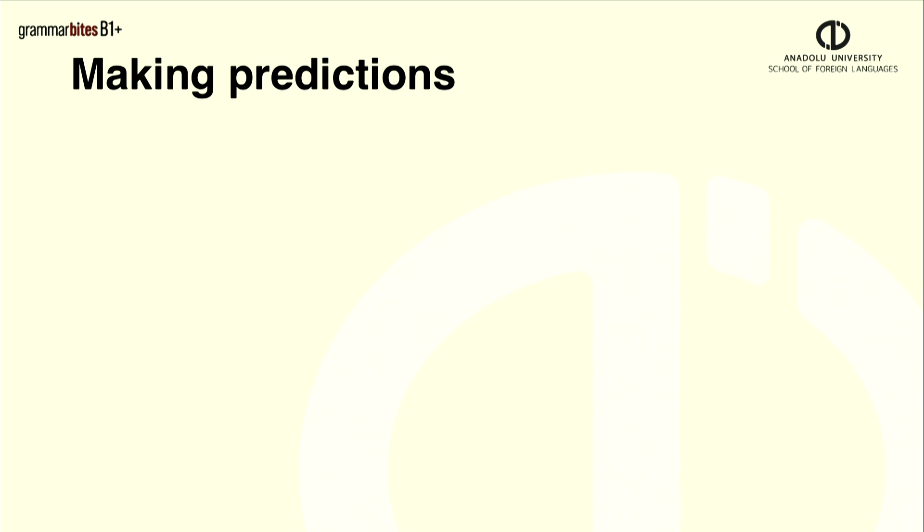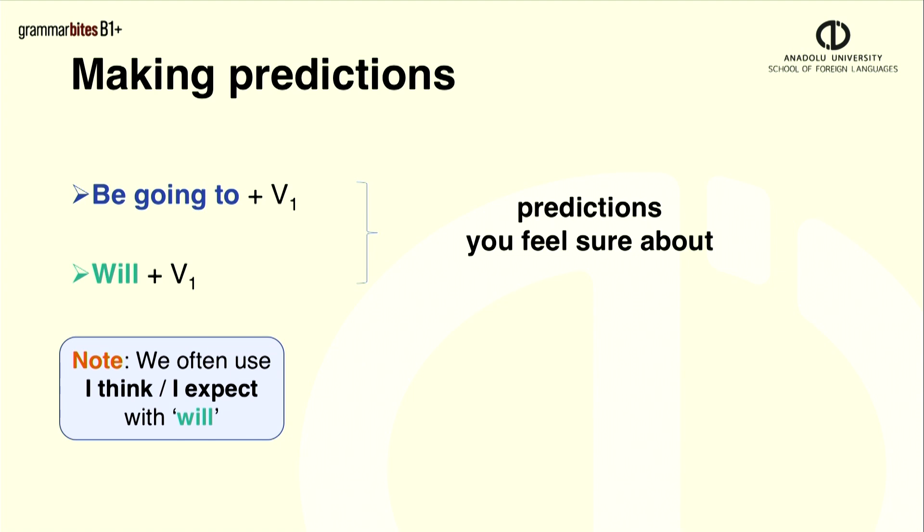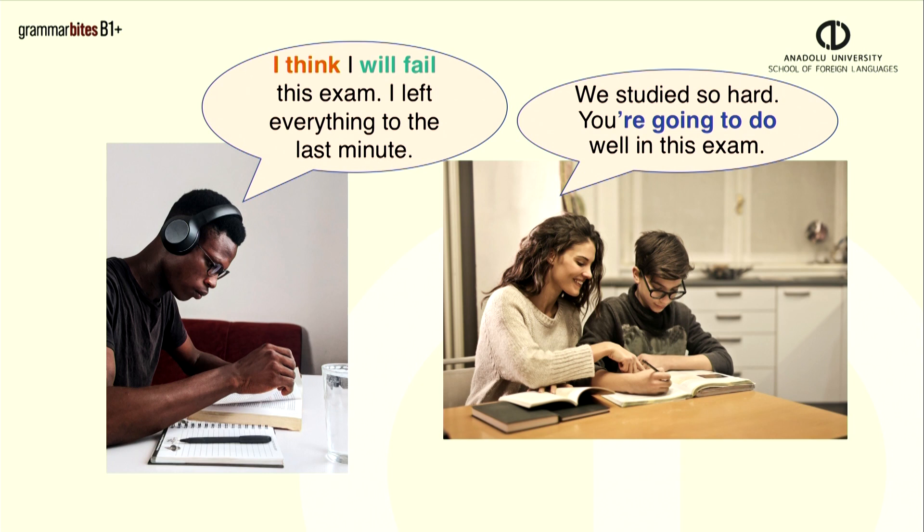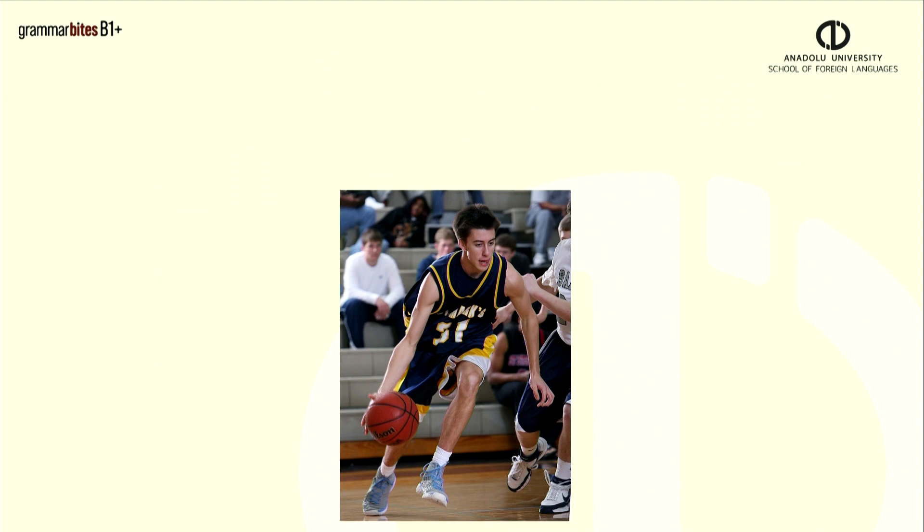When we talk about predictions or guesses about the future, we can use will or be going to. It's common to use I think, I expect with will. Here is another example. I think I will fail this exam. I left everything to the last minute. We studied so hard, you're going to do well in this exam. Two fans are talking and making predictions about the match result.